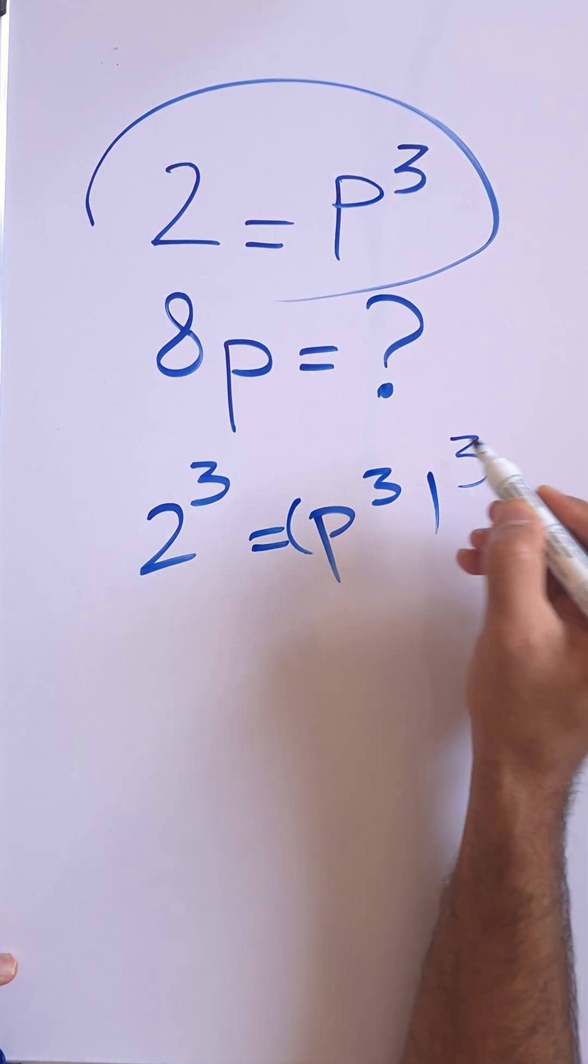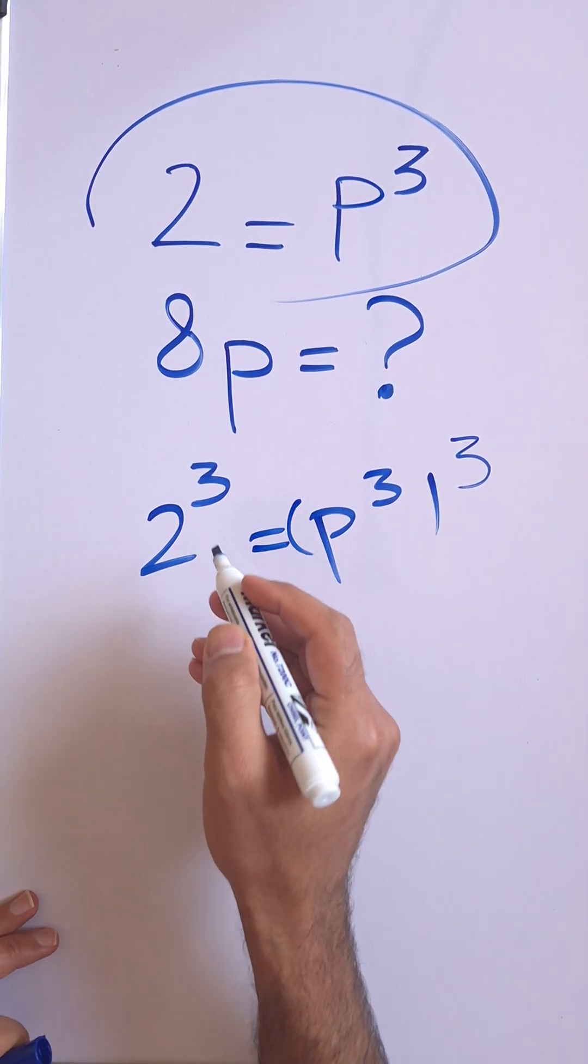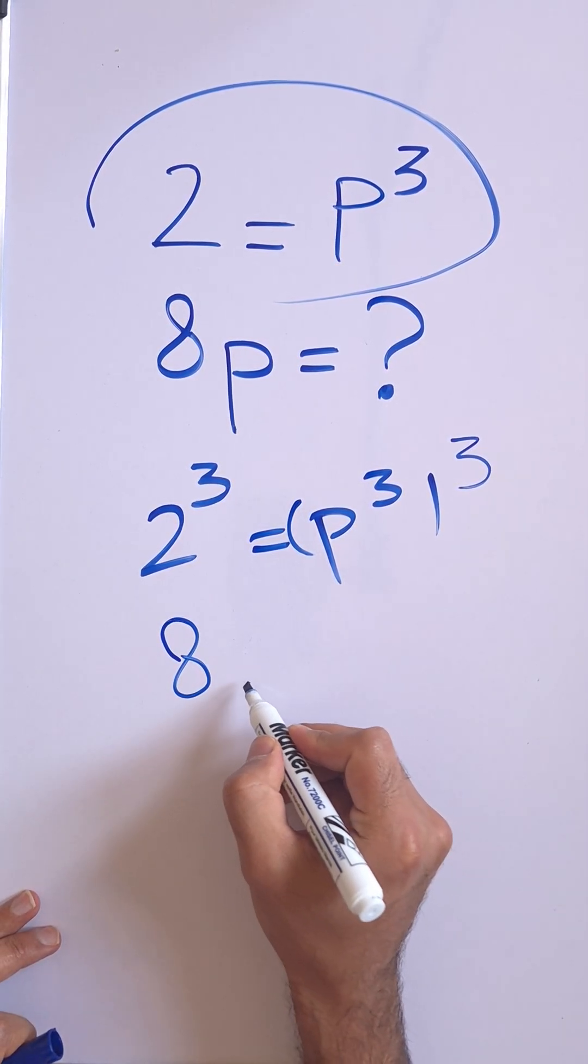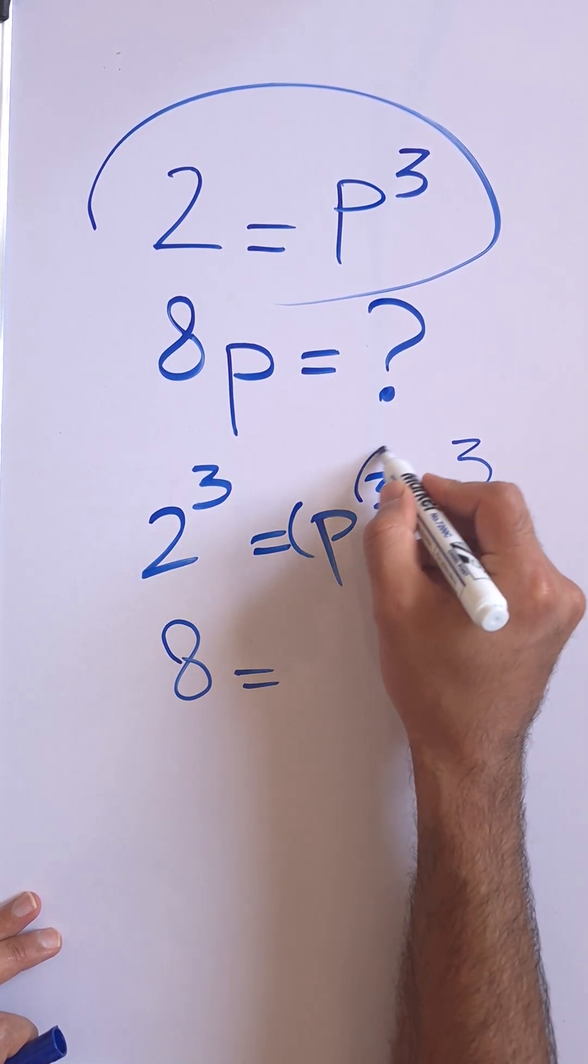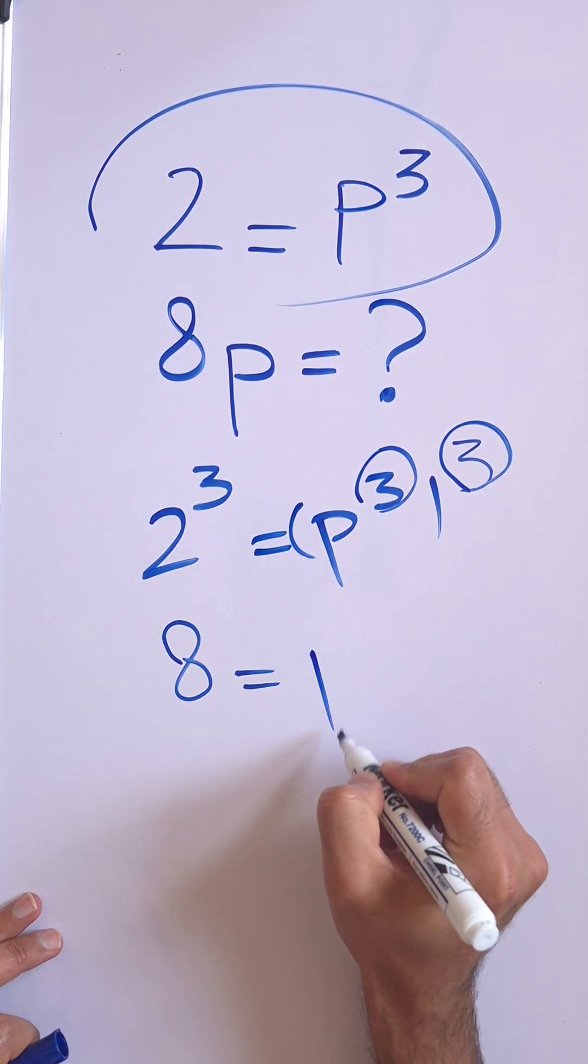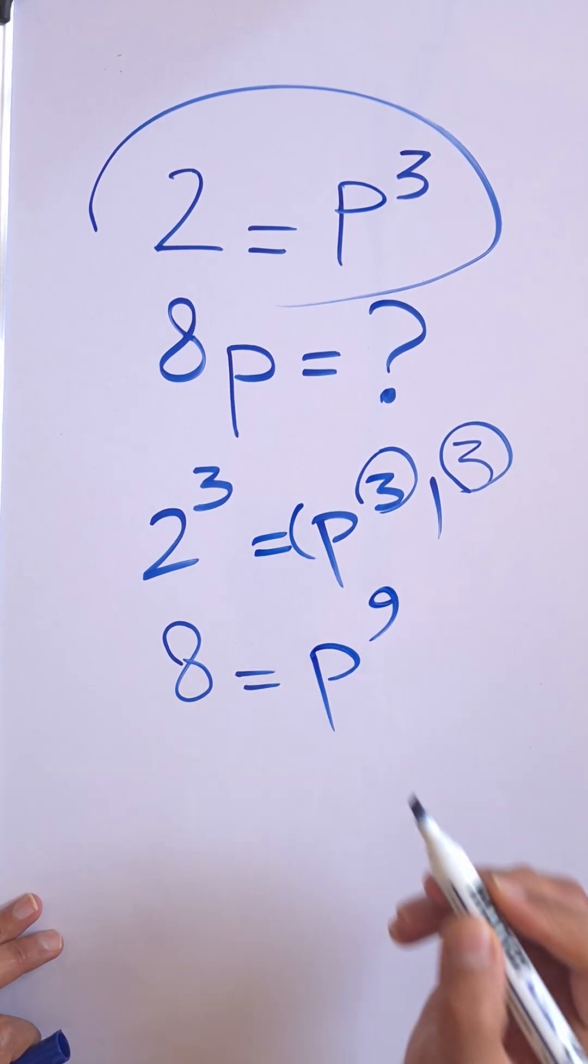2 to the power of 3 is just 8, and p cubed and then cubed, so we can multiply the exponents. It is p to the 9.